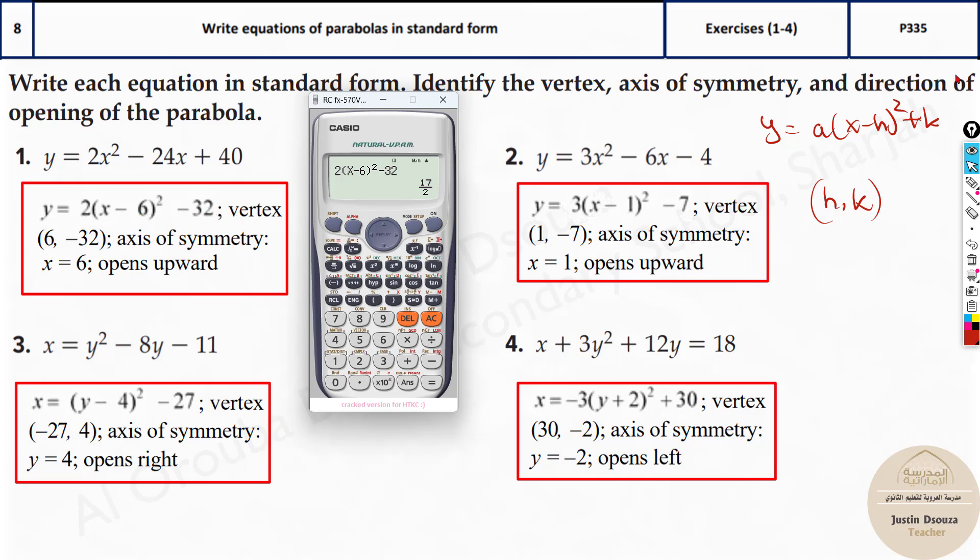Minus 6, and this one you need to change the sign for the h value. That is the x value of the vertex. If it is minus 6, it will be plus 6. But this one as it is: minus 32 is the y value of vertex. The axis of symmetry is whatever the x value of the vertex, that is 6. And it opens upwards.